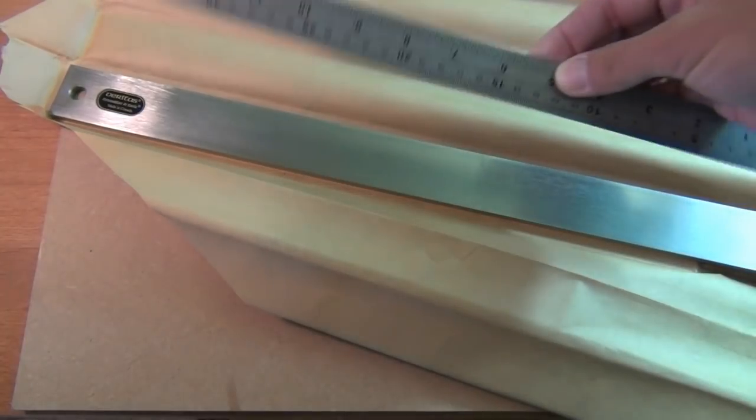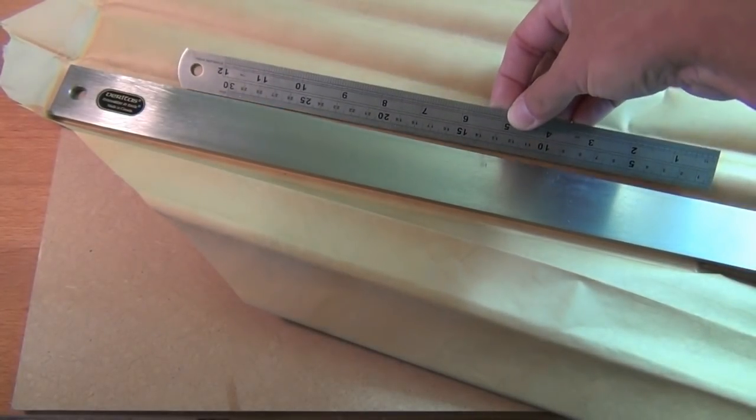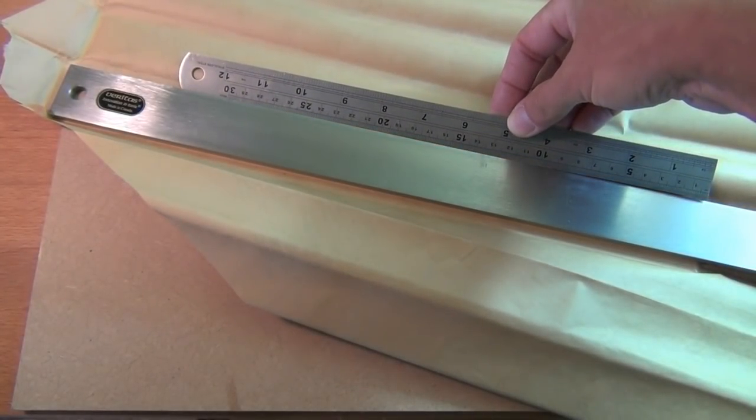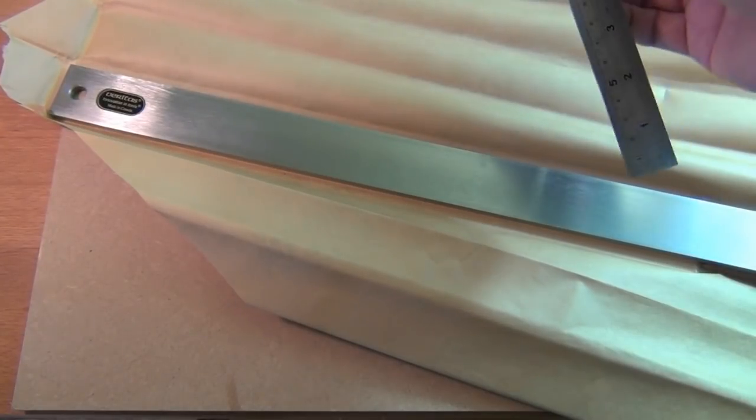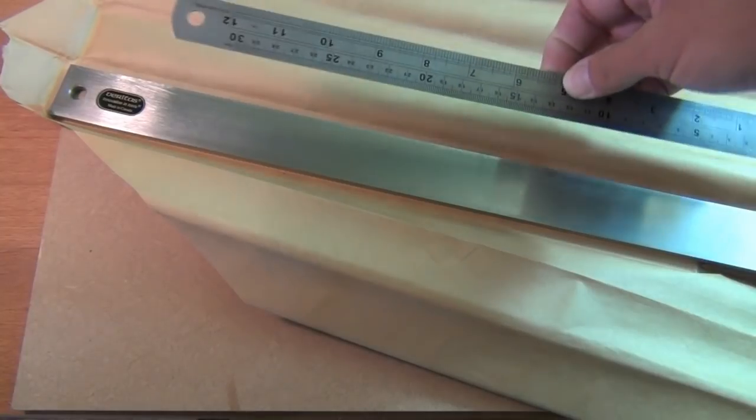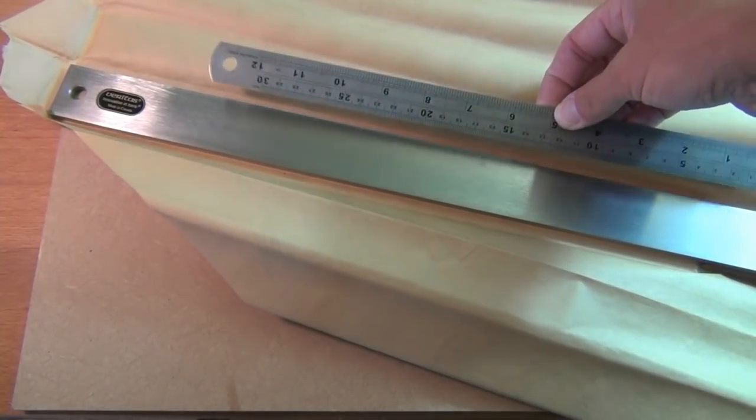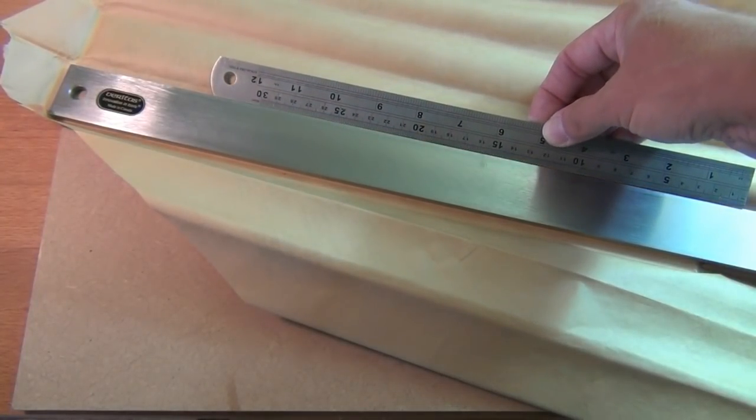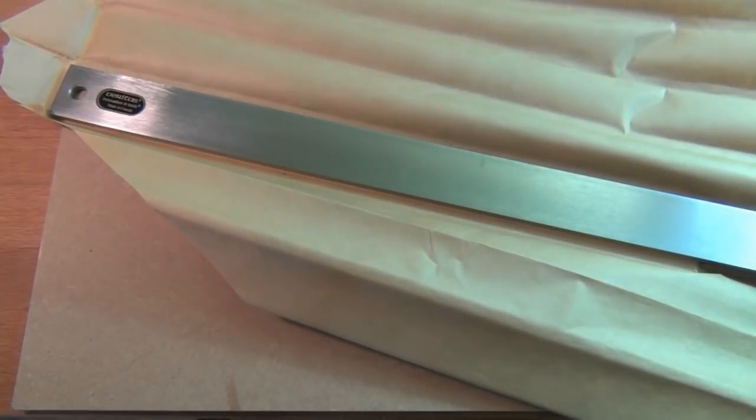We can check our steel rule along the edge of this straight edge, holding it up against the light source. If the steel rule is straight, then along the entire length where they're touching, you shouldn't see any light come through at all.